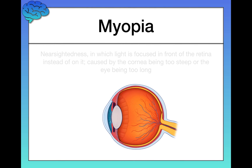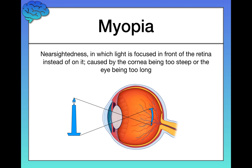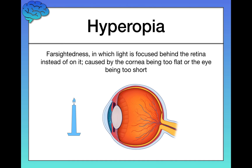As a last topic, let's go back to farsightedness and nearsightedness. Myopia is nearsightedness, caused by light being focused in front of the retina instead of directly on it — meaning when light reaches the retina, it's blurred and distorted. This is caused by the cornea being too steep, or by the eye being too long so the retina is further back than it should be. Hyperopia is farsightedness, where light is focused behind the retina, caused by the cornea being too flat or the eye being too short.